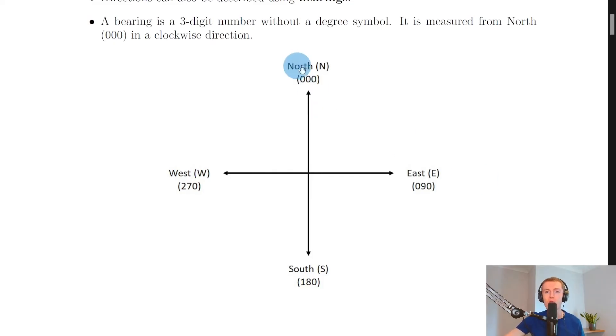So it's useful to know the four main compass points - north, east, south, and west - and their associated bearings. This is going to be useful when we do questions which ask us to determine the displacement of an object, i.e., the magnitude (which would be the distance) as well as the direction of an object.